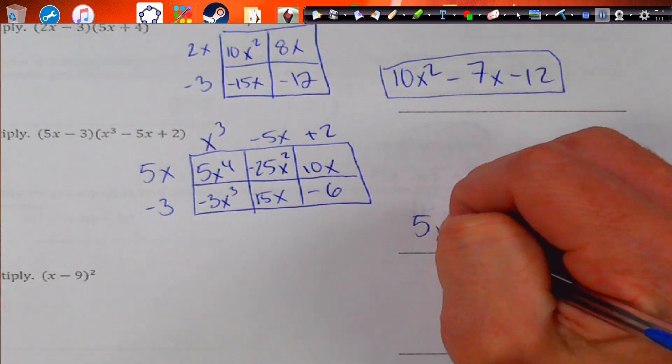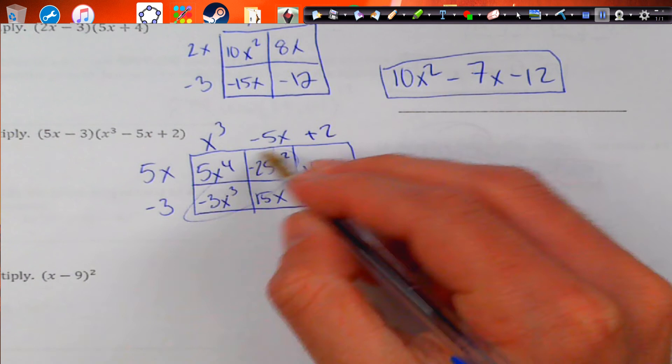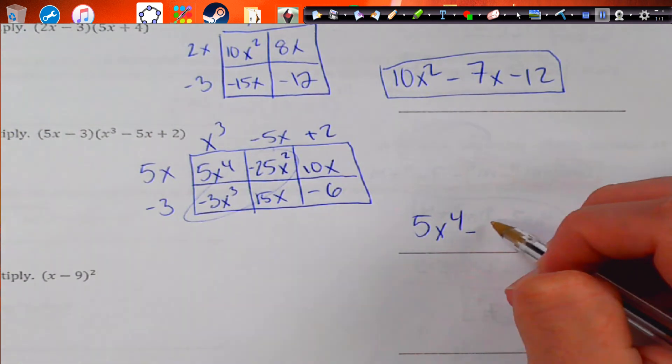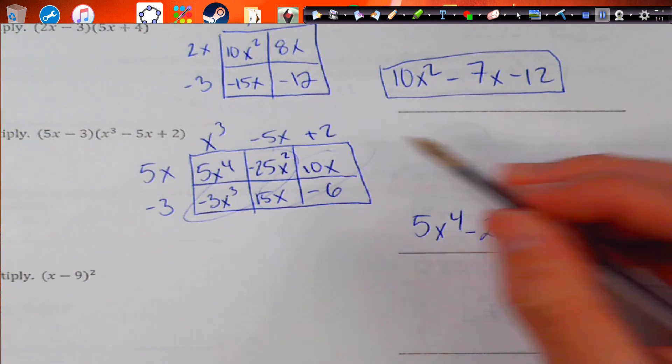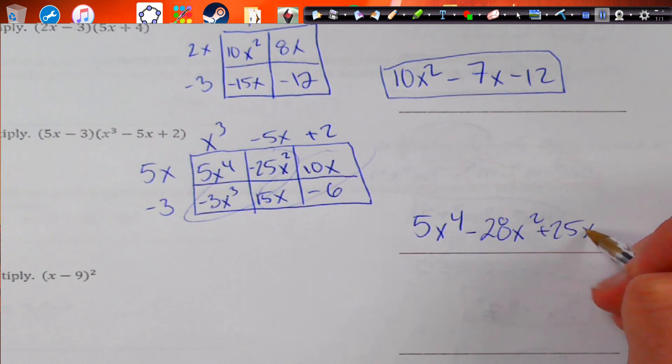And we only have 1 x to the fourth term. These are going to combine to give me negative 28x squared. And then these will combine to give me 25x and then negative 6.